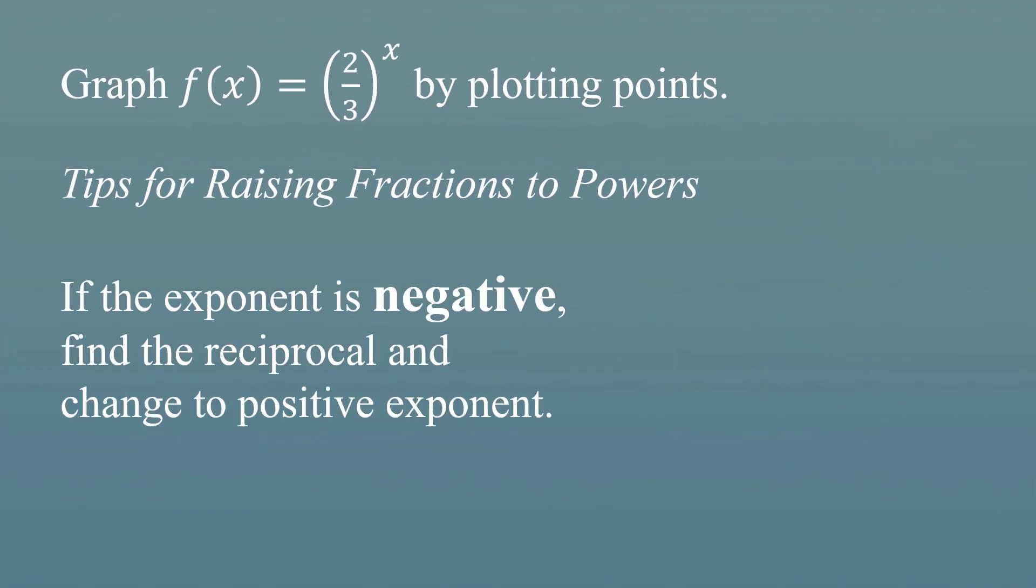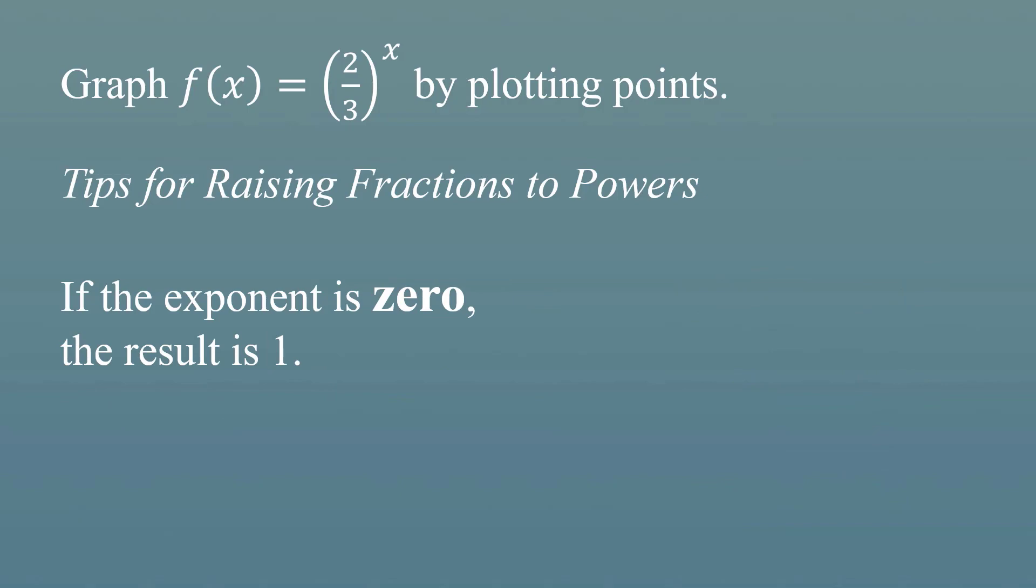Another thing to keep in mind is you might have to raise two-thirds to a negative exponent. Raising to a negative exponent tells you that you're going to take the reciprocal of the number. So for example, if I were to raise two-thirds to the negative second power, this would be the same as raising three-halves, the reciprocal, when we flipped over the fraction, to the positive second power. And then from there, we can do the same thing we did before. This would be three to the second over two to the second, which is going to be nine-fourths.